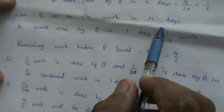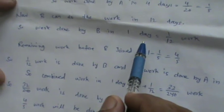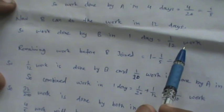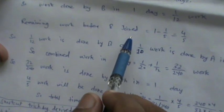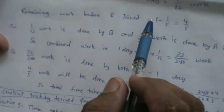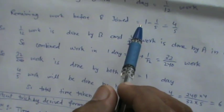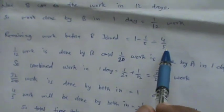Now B can do the same work in 12 days. So work done by B in 1 day is equal to 1 over 12. Now the remaining work after B joined, because A has done the work for 4 days, the remaining work is we have to reduce it from 1. 1 means total work. 1 minus 1 over 5, the work done by A, is equal to 4 over 5.